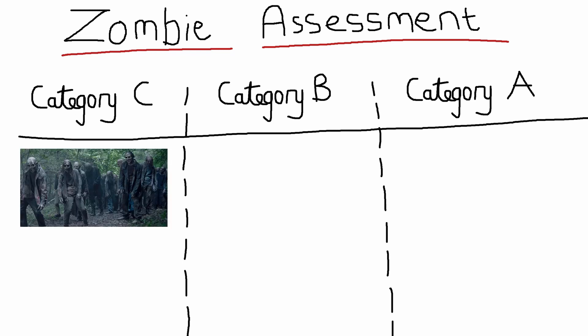In Category C we have the Walking Dead type zombies. These are zombies which haven't discovered running yet and just walk everywhere. The fastest you'll ever see these zombies go is like a power walk. If these are the zombies you see, then don't worry, surviving this apocalypse will be a piece of cake.